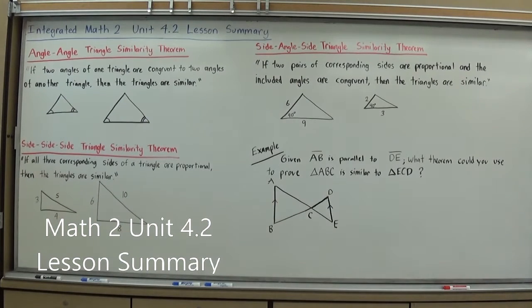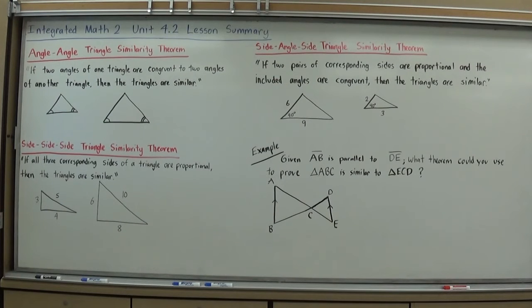In Unit 4.2, we're going to continue our study of similar triangles and actually start talking about ways in which we can prove that triangles are similar or verify that triangles are similar, maybe even construct similar triangles. This section of this chapter is very similar to something you did back in Integrated Math 1, which we'll actually revisit this year in Chapter 5 and 6, which is what makes triangles congruent.